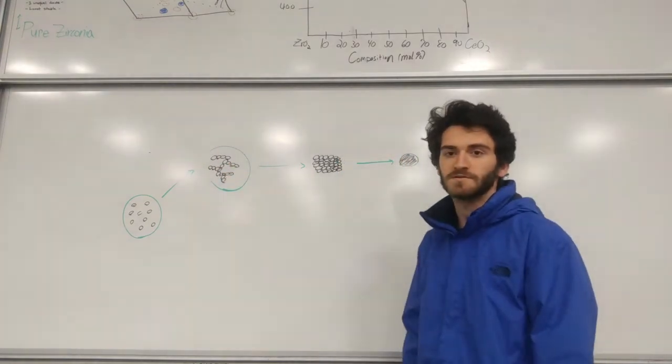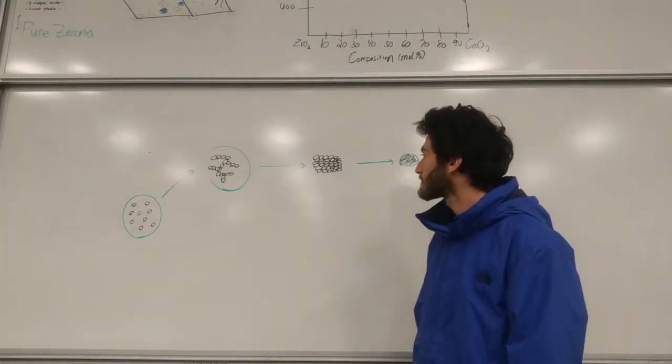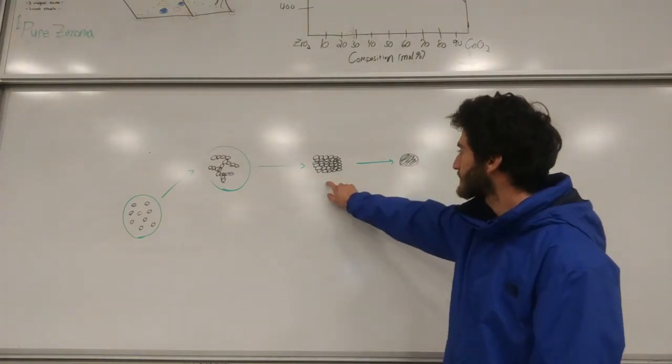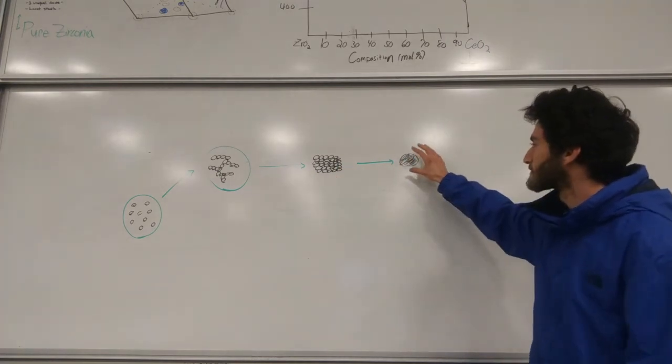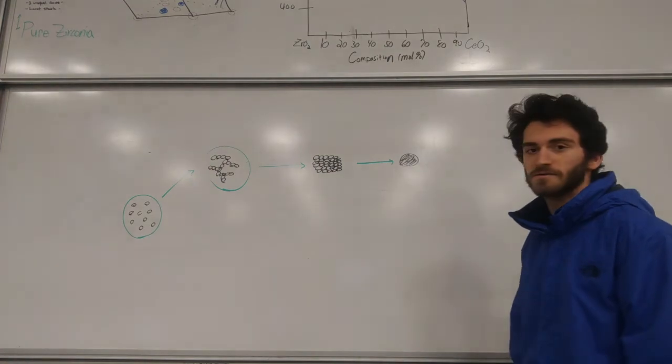And then after this step, you're going to evaporate off all the water so that you get this structure right here. And then once heat is applied, the structure condenses further and forms a very dense and hard ceramic.